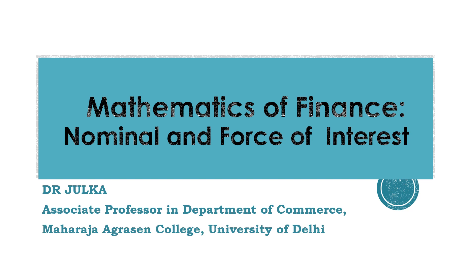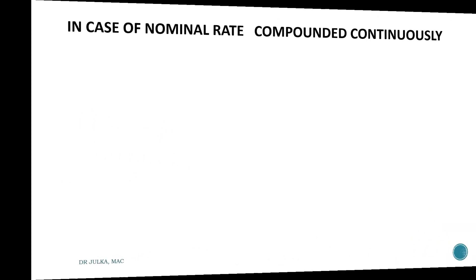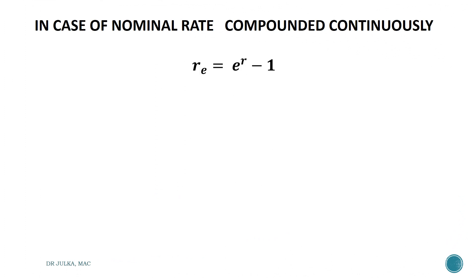Force of Interest refers to Nominal Rate of Interest compounded an infinite number of times per time period. In case the Nominal Rate is compounded continuously, the Effective Rate equals e raised to the power r minus 1, where Re stands for Effective Rate of Interest and R is the Rate of Interest compounded continuously.